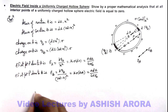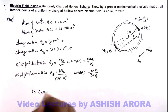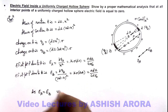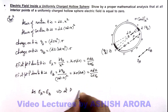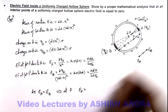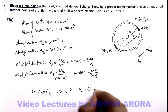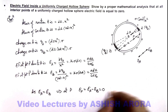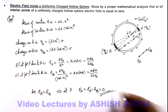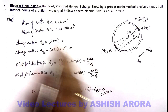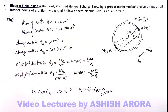Here we can see that since eA is equal to eB, this implies that at point P the net electric field, which is the difference of the two — eA minus eB — can be written as zero. And that is what we are willing to prove here.